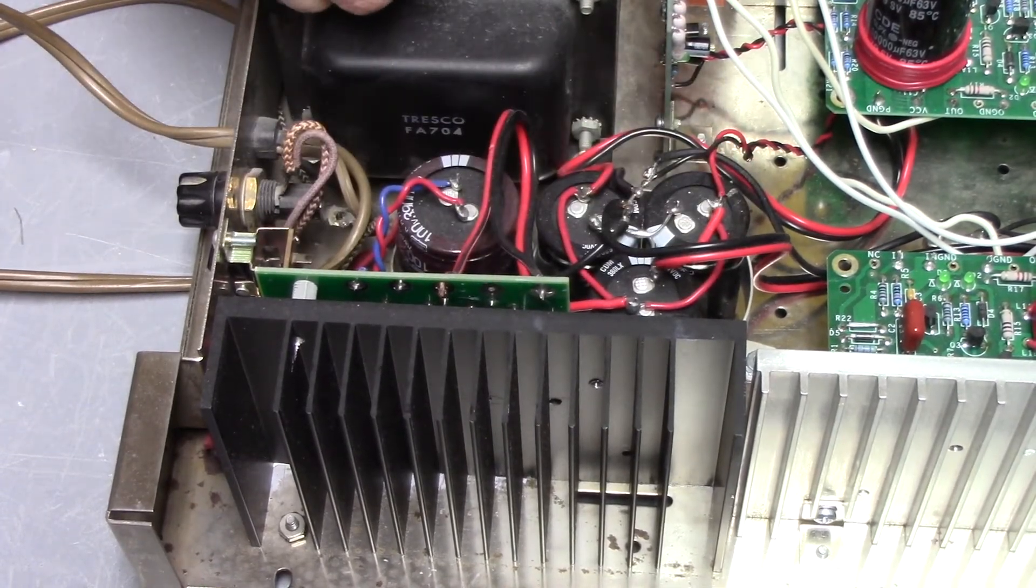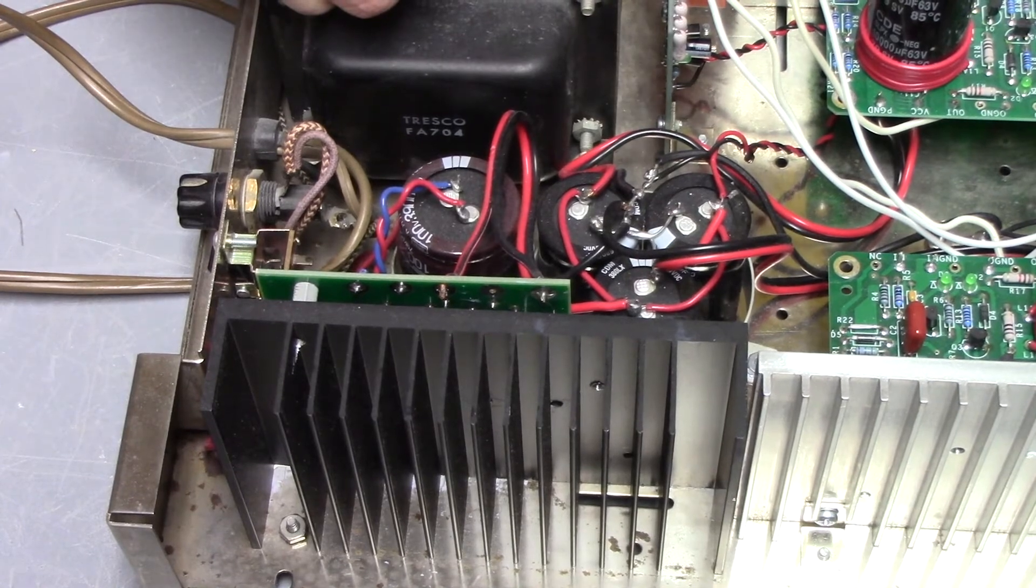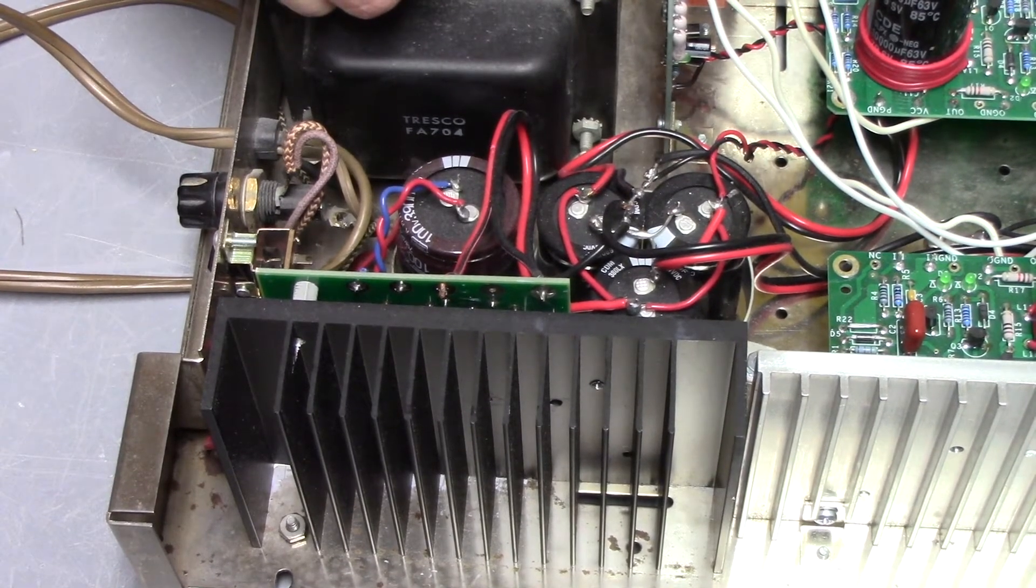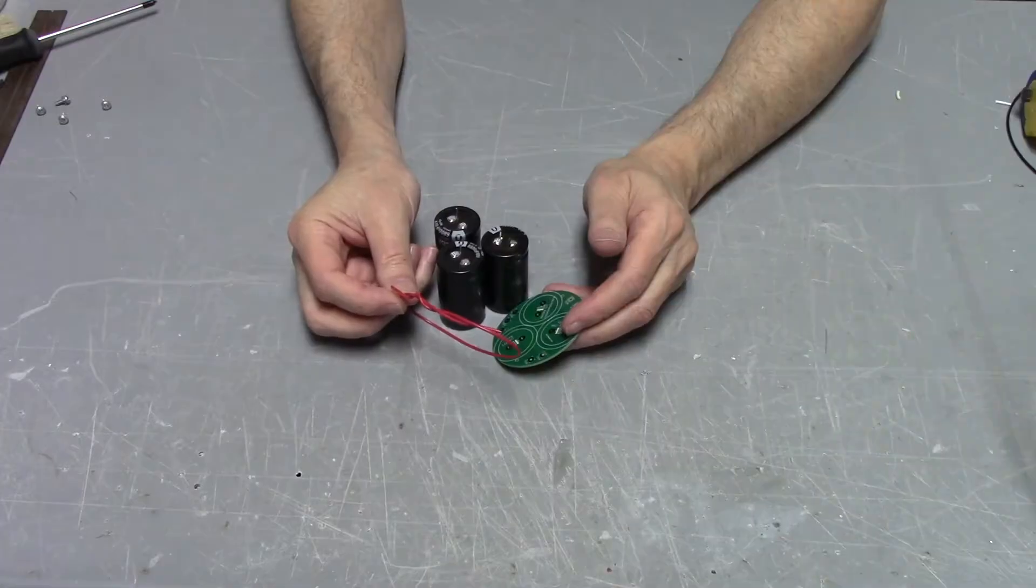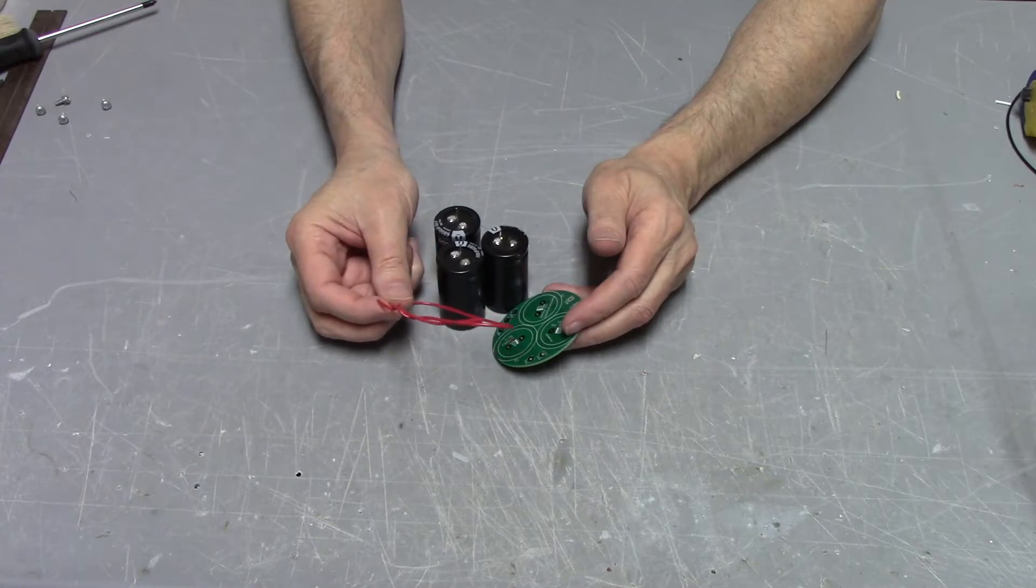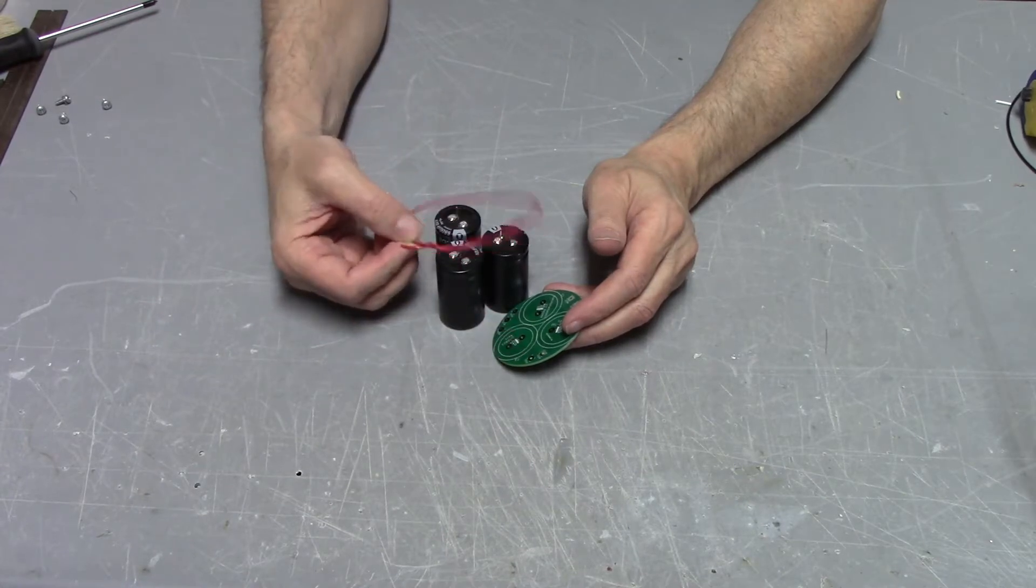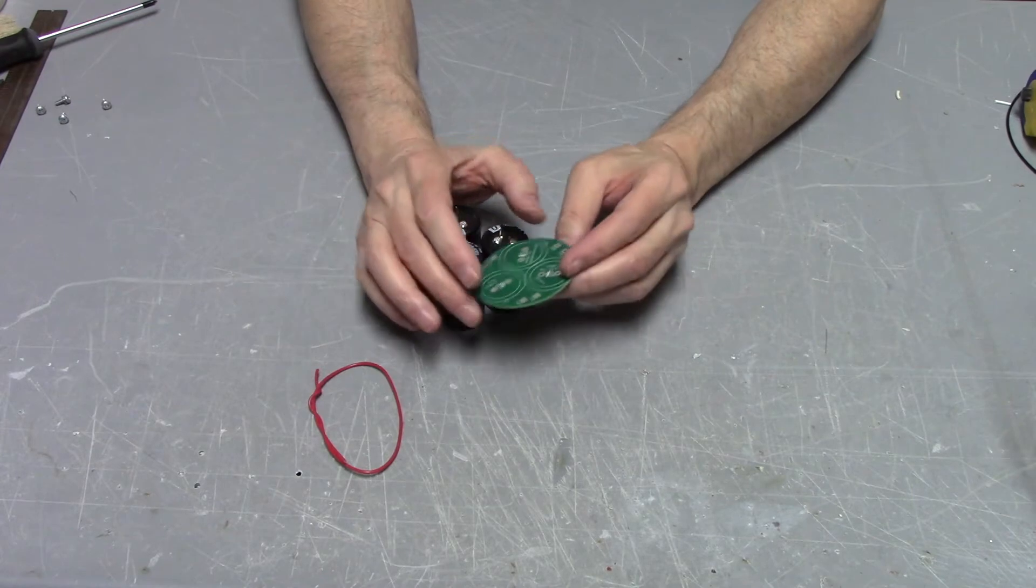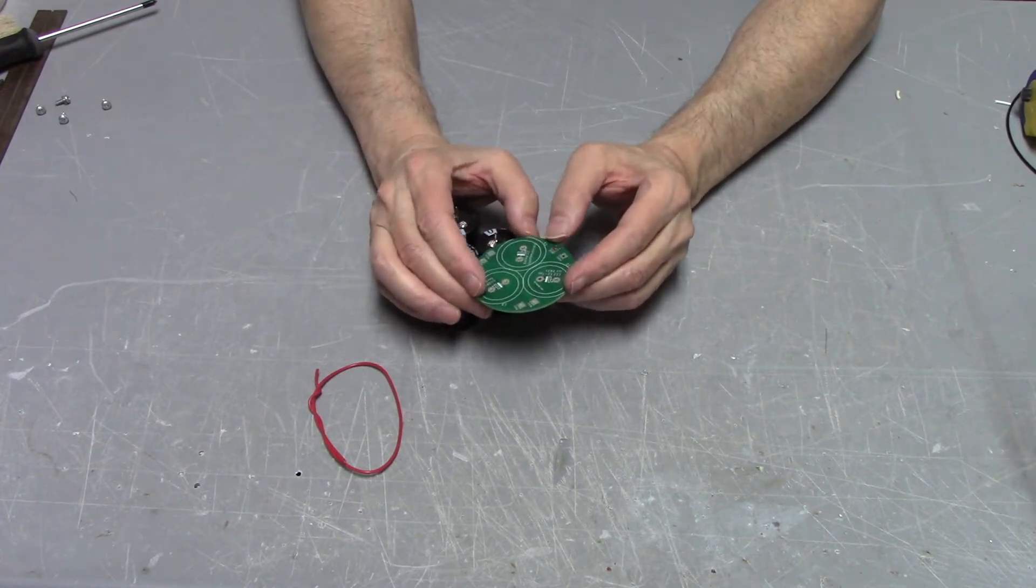Will it sound any better? Well, it might, but it's going to look cool. Previously, we would have used some 18 gauge wire to tie all this together on the top, but instead we're going to use the Easy Topper.